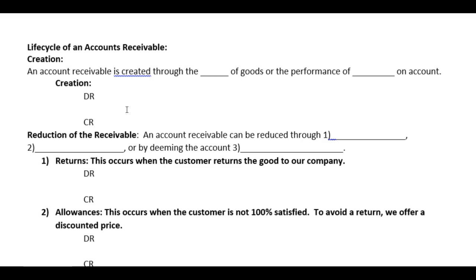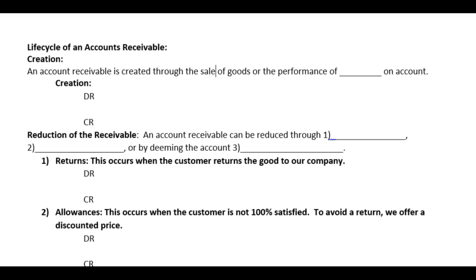In Chapter 5, we begin looking at receivables and merchandising companies. Let's start with receivables and define what accounts receivable are, so we have a better understanding of what creates them. An account receivable is created through the sale of goods — when we sell a good on account, it creates the receivable because we give the good to the customer but they have not yet paid us. So when they owe us money, we call that an account receivable. It can also be created through the performance of services on account.